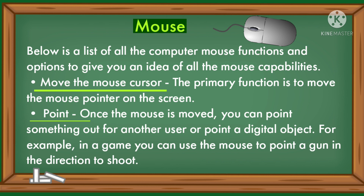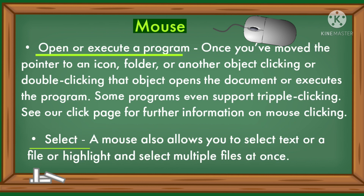Move the mouse cursor: the primary function is to move the mouse pointer on the screen. Point: once the mouse is moved, you can point something out for another user or point to a digital object. Open or execute a program: once you have moved the pointer to an icon, folder, or another object, clicking or double-clicking that object opens the document or executes the program. Some programs even support triple clicking.